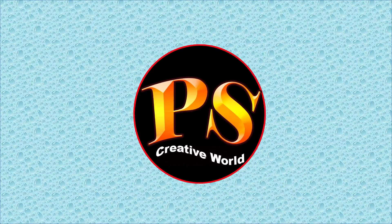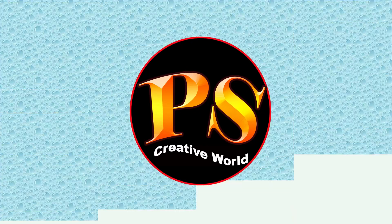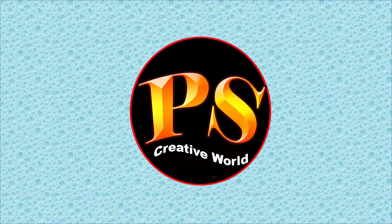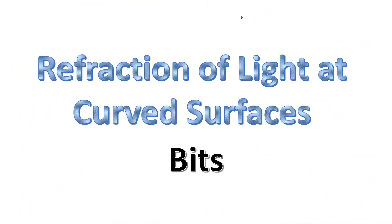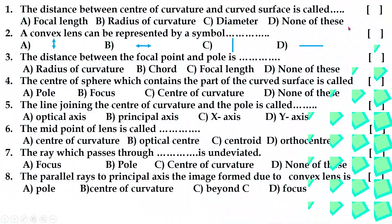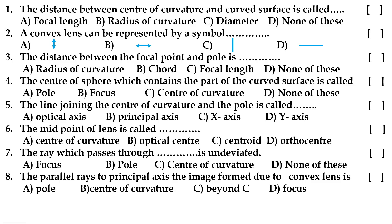Now I am discussing bits for the chapter of refraction of light at curved surfaces. The distance between the center of curvature and the curved surface is called: option A focal length, option B radius of curvature, option C diameter, option D none of these. The correct answer is B, radius of curvature.